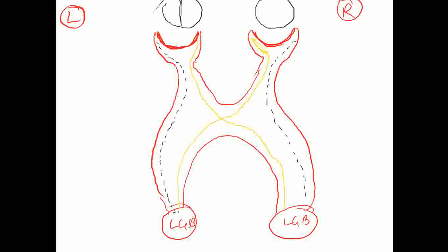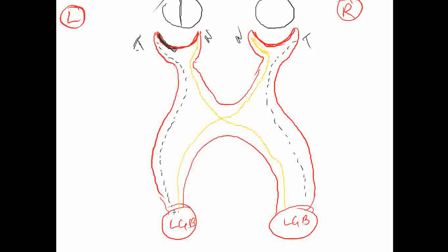Suppose this is your left eye. The left part — the lateral part — is known as the temporal retina, and the medial part is known as the nasal part. Similarly, the nasal part of the right eye and the temporal part of the retina of the right eye. So whatever ends on the left side of the socket projects the right side of the visual field. This nasal part of the retina would be seeing the temporal part of the visual field, and the temporal retina would be seeing the nasal part of the visual field.